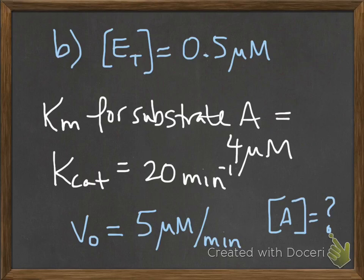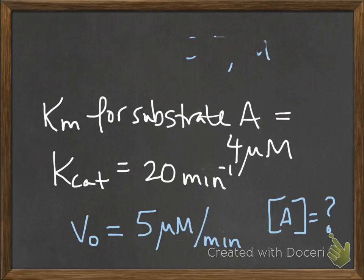Again, for Part B, there are two ways to do this. There's one way where you can plug in all of your numbers into the form of Michaelis-Menten that has the constants that you have numbers for. But again, there's a shortcut that involves conceptual understanding, and that's what the solution manual is explaining. So I'll explain what that method is.